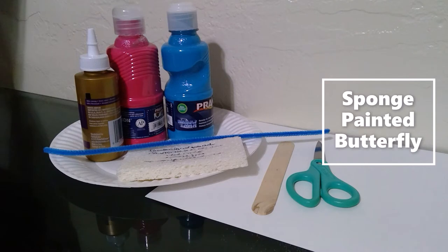Hi everyone, it's Maria from UNR Extension Partners in Parenting. Today we will be making a sponge painted butterfly. The materials you will need are paint, whatever color paint you want to use, glue, pipe cleaner, a sponge, scissors, craft stick, and paper or cardstock paper will work best.